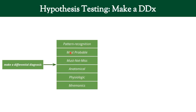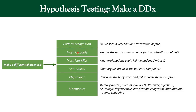When you make a differential diagnosis, you'll use one of several different methods. I wrote them down here. Pattern recognition means you've seen something like this in the past. So if you see somebody who comes in clutching their chest, looking sweaty, and you've seen 17 patients this week who looked exactly like that and had a heart attack — you know they're probably having a heart attack. This is built with experience.